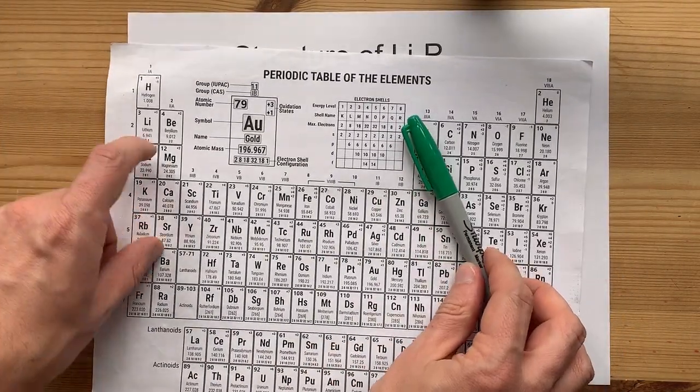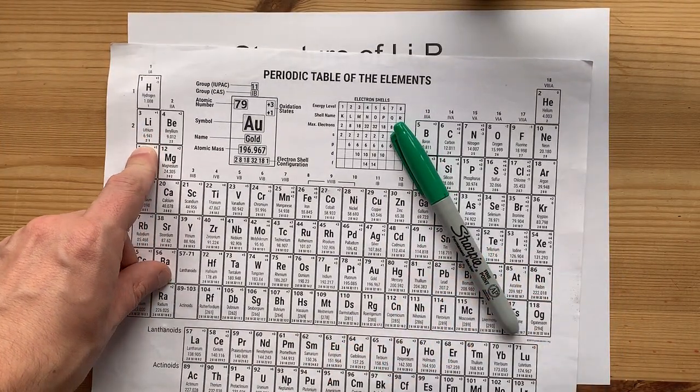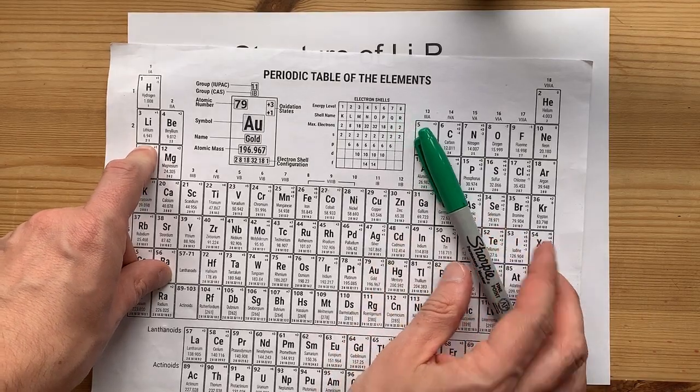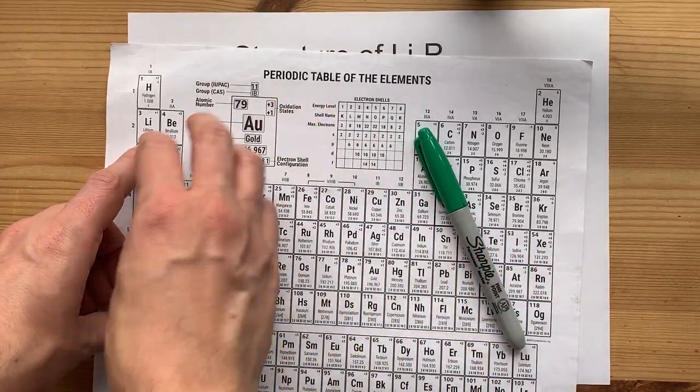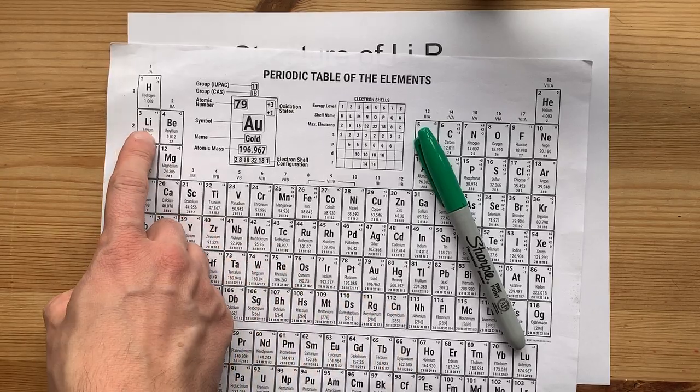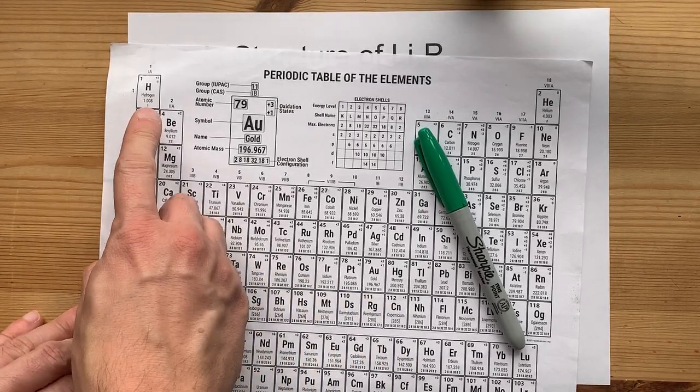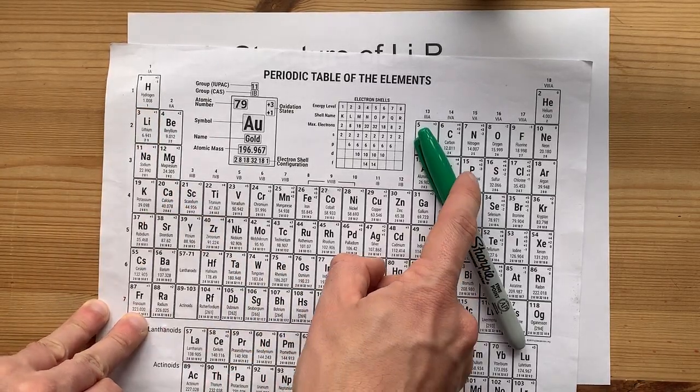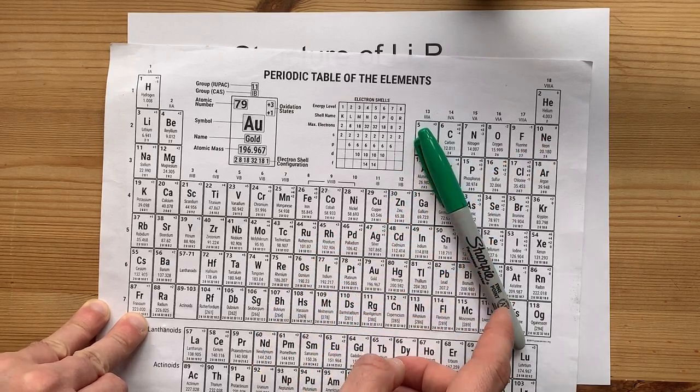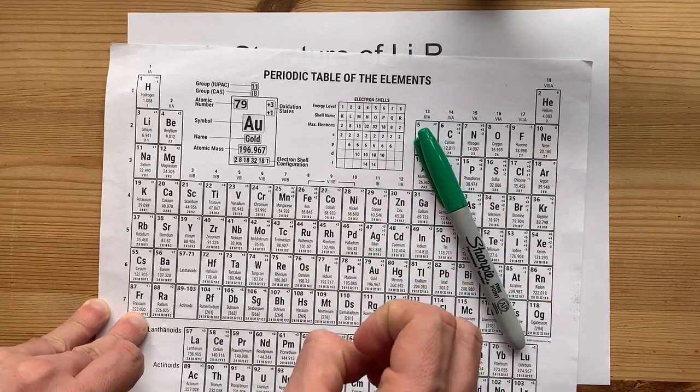Now, lithium is a metal. It comes from the far left of the periodic table. The only non-metal in this entire section is hydrogen. Lithium is definitely an alkali metal. And phosphorus is to the right of the staircase here. It's a non-metal.